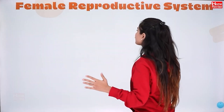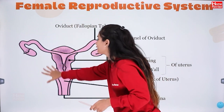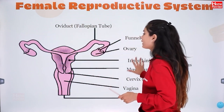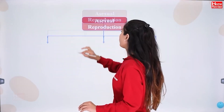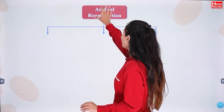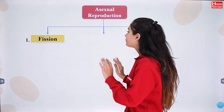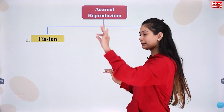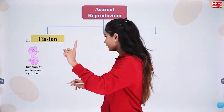If we look at the female reproductive system, this is the female reproductive system. Now let us come to asexual reproduction first. We will see three types. Number one: fission.